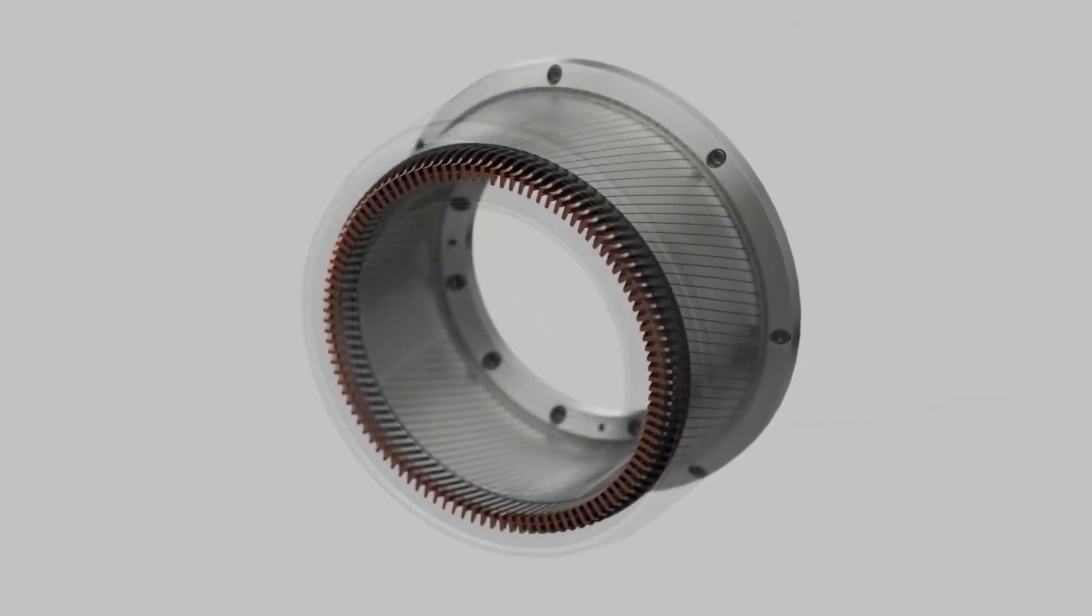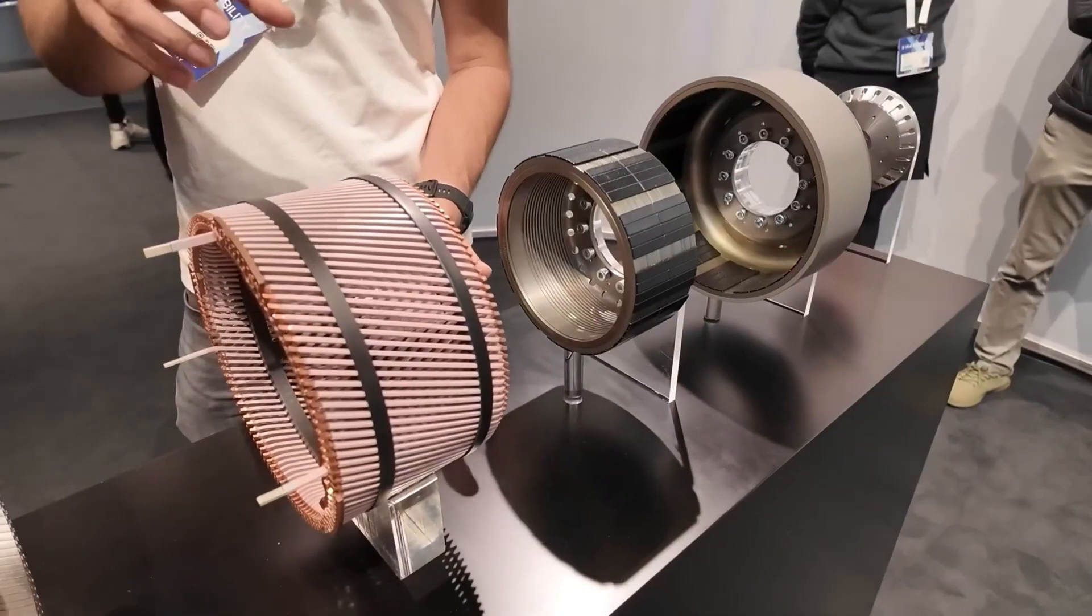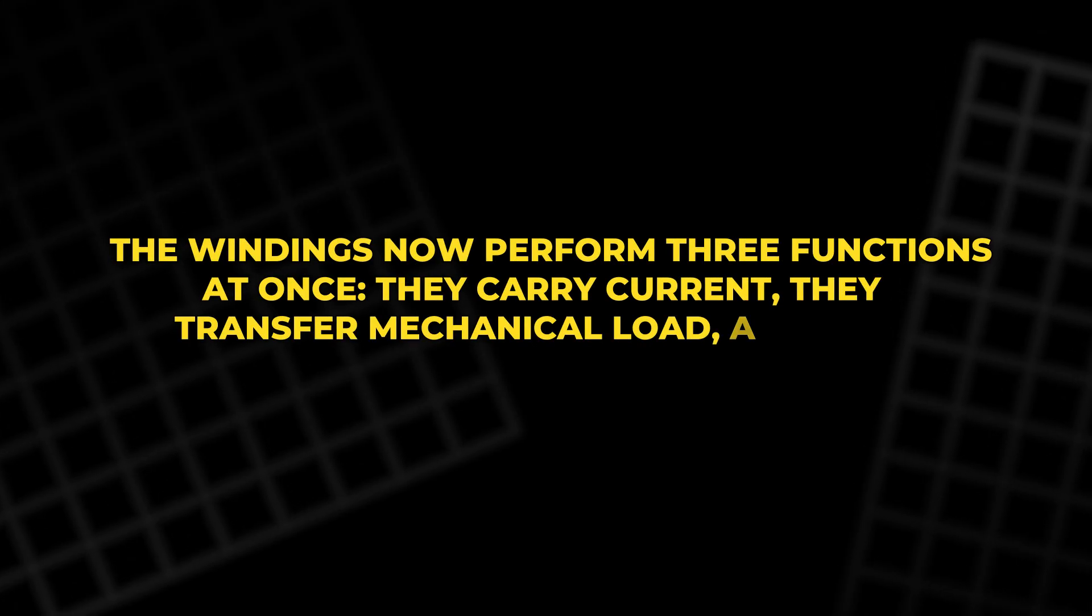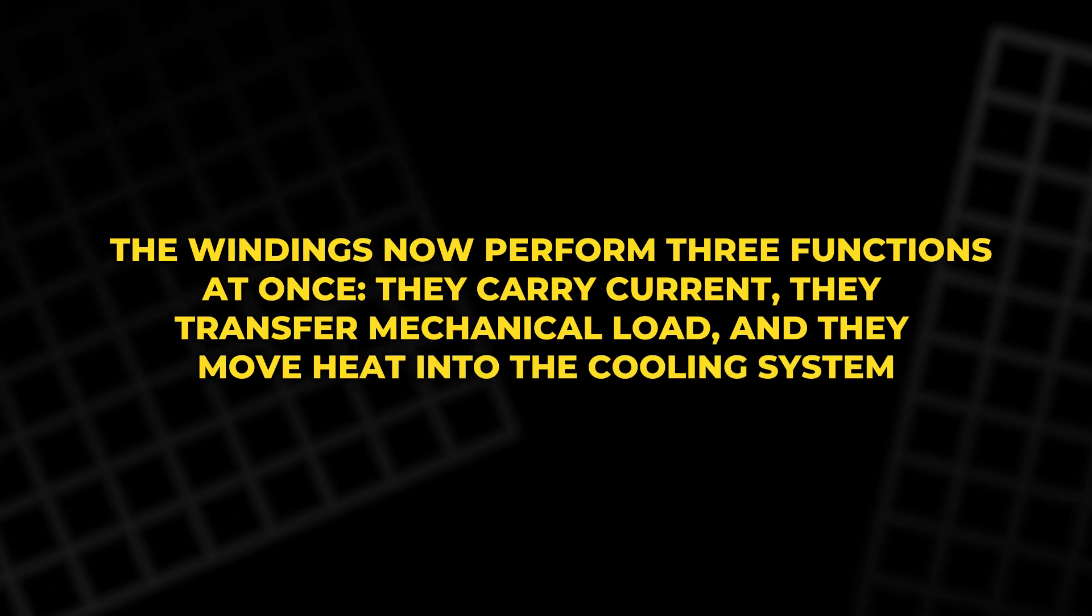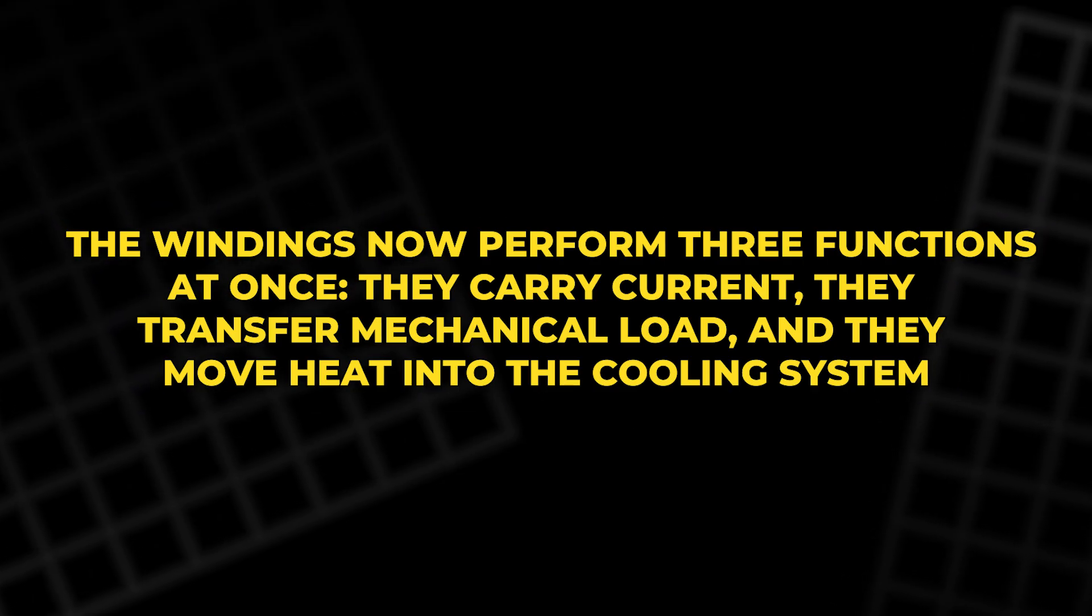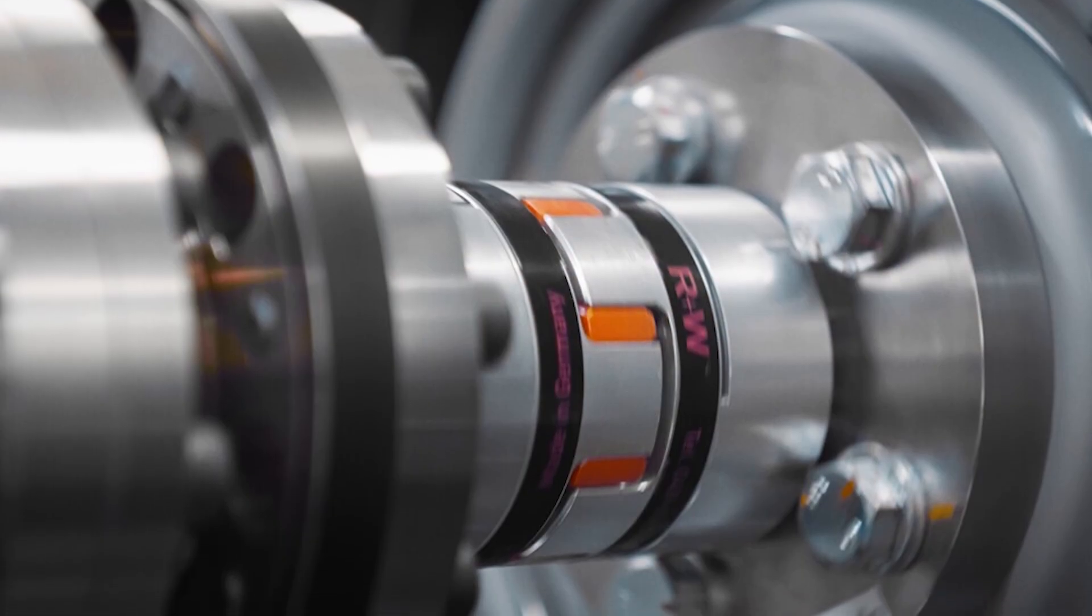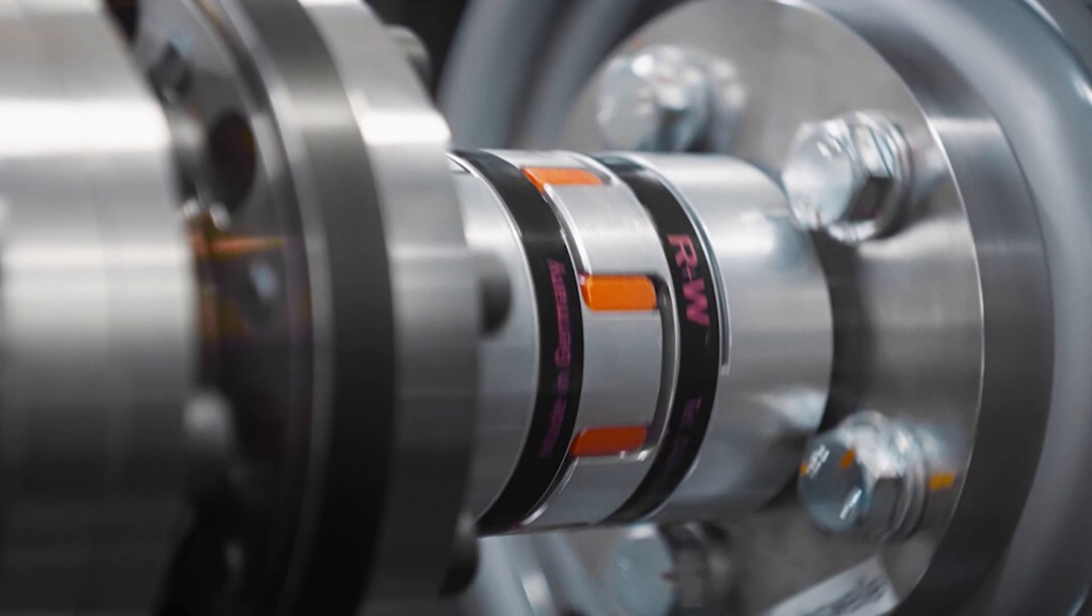Copper is an excellent conductor of heat, so using thick bars improves temperature control. The windings now perform three functions at once. They carry current, they transfer mechanical load, and they move heat into the cooling system. This multifunctional behavior is what makes the entire dual-rotor concept work.